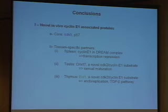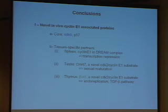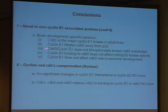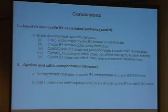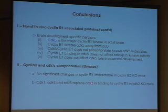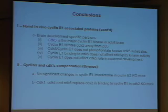In conclusion, I've told you about two novel proteins identified as binding to Cyclin-E in all organs analyzed. I've told you about tissue-specific partners that implicate Cyclin-E in transcriptional repression, sexual maturation, and endoreplication, as well as the TGF-beta pathway. I've also described the brain-development-specific partner CDK5, which is the major CDK of Cyclin-E in adult brain, although it is not active on known CDK5 substrates. In terms of compensation, the absence of Cyclin-E2 doesn't affect the Cyclin-E1 interactome, but the absence of CDK2 leads to substitution by CDK1, 4, and 5.